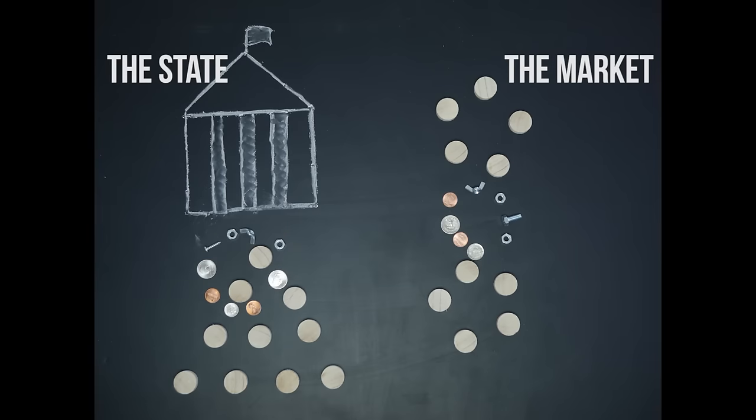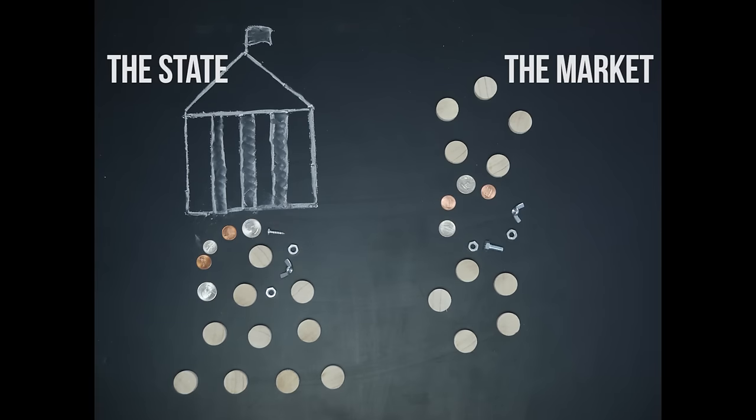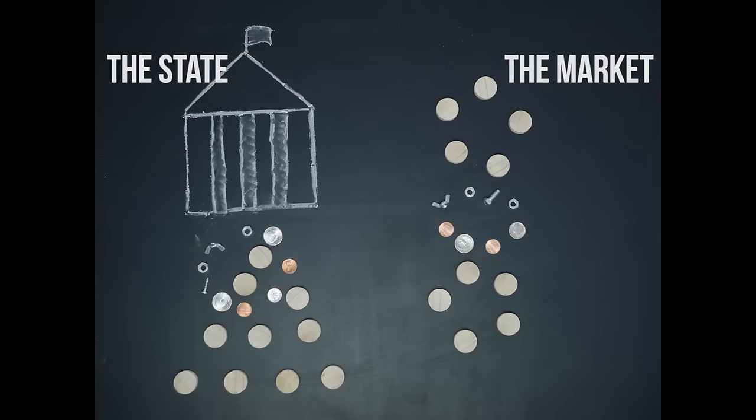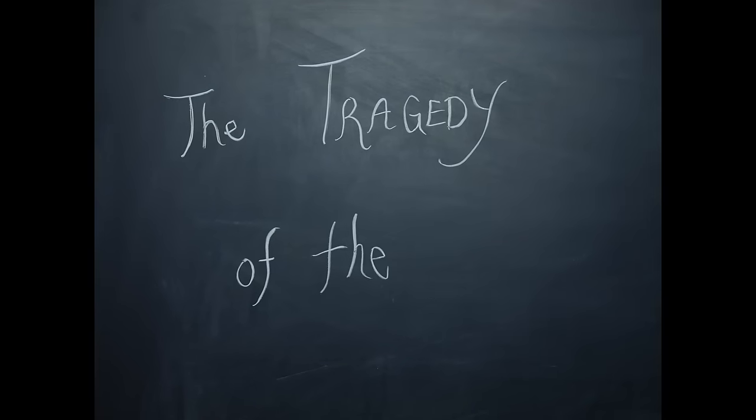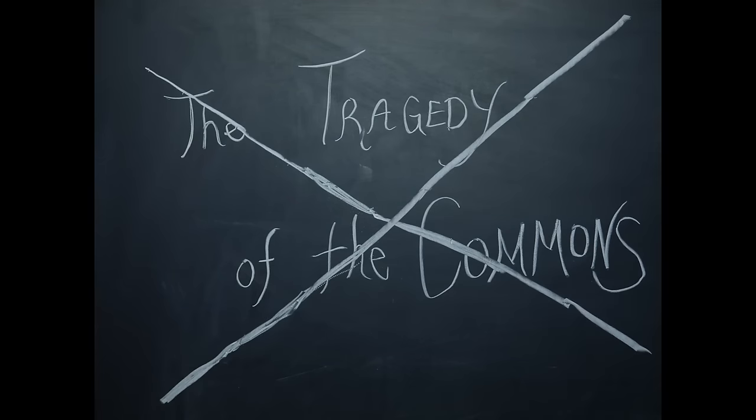This argument that people are incapable of managing shared resources for the common good without the state or market as arbiters has been dubbed the tragedy of the commons, and according to David Bollier, it's totally wrong.